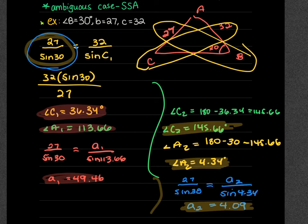Remember, this ambiguous case only happens in a side-side-angle scenario. If you have angle-angle-side or two angles and one side, there's no possibility of a second triangle — you just find the third angle using 180 minus the other two and set up your ratio. A mnemonic: SSA spells a bad word forwards or backwards — it's a pain in the SSA. That's how to remember it's the problematic case.